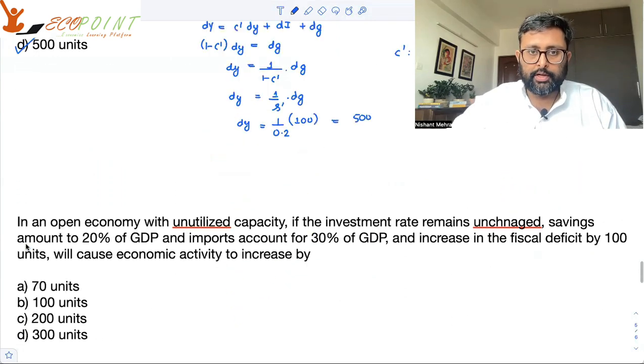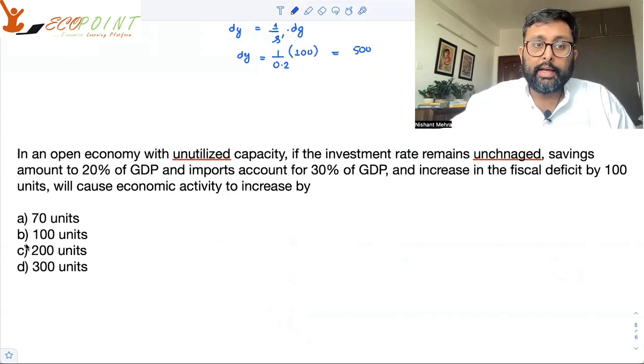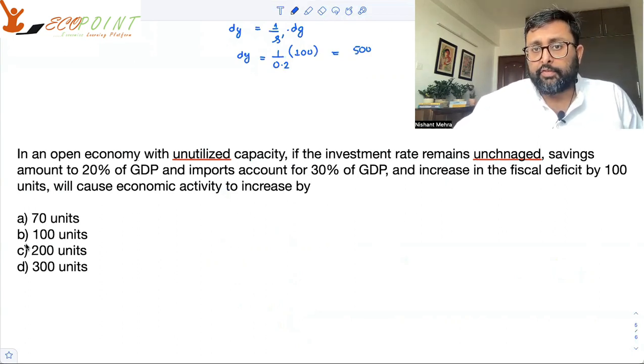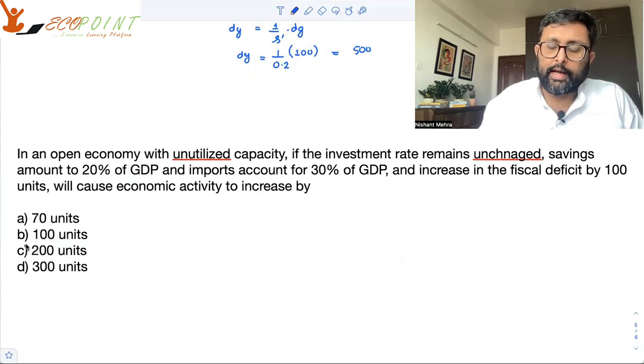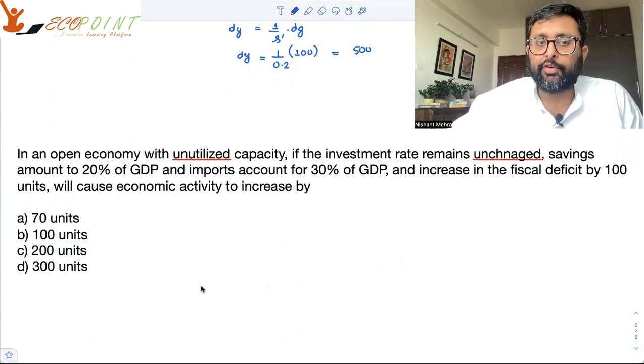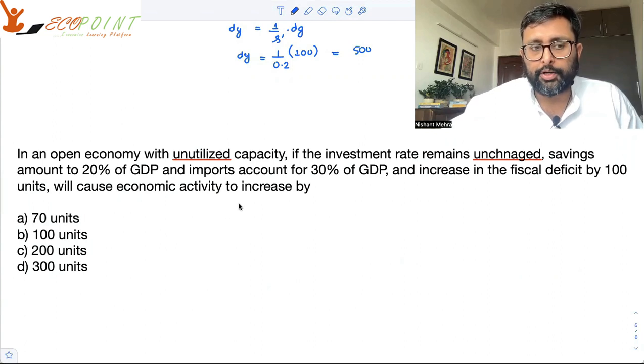There is one more question we're talking about. In an open economy with unutilized capacity, if the investment rate remains unchanged and the savings amount to 20% of GDP and imports account for 30% of GDP, then an increase in fiscal deficit by 100 units will cause economic activity to increase by how many units?